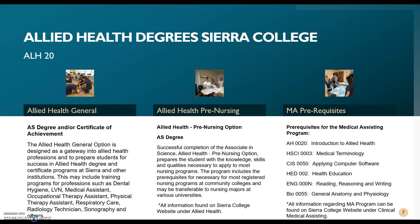Sierra College is building an amazing Allied Health program. Two years ago we brought on our allied health general degree — you can get an associate's degree in allied health. This option is designed as a gateway into allied health professions. Many professions require a two-year degree to apply, such as occupational therapy, physical therapy, and respiratory care, where you could use your associate's to apply for your four-year program. We also have the allied health pre-nursing associates degree, which prepares students with the knowledge, skills, and qualities to apply to most nursing programs, including our own here at Sierra College.